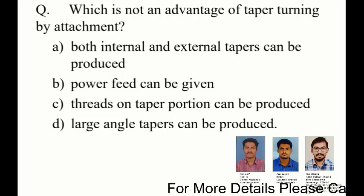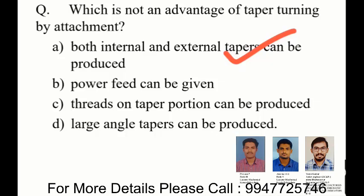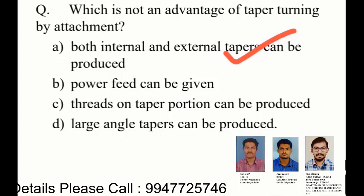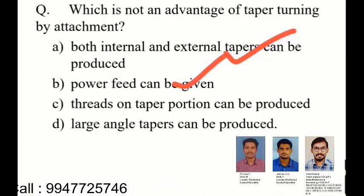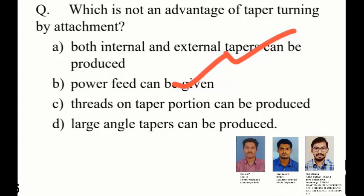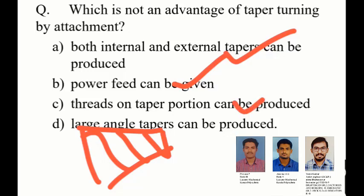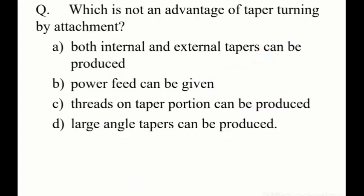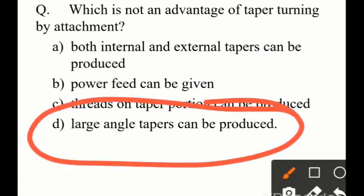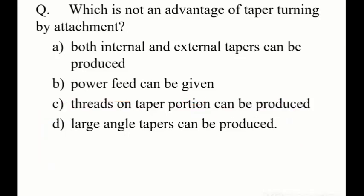Option A is correct - taper turning attachment can machine internal and external taper. Power feed can be given. The third option - thread on taper portion - is also correct. However, large taper angle cannot be produced by taper turning attachment, so Option D is the correct answer as the disadvantage.